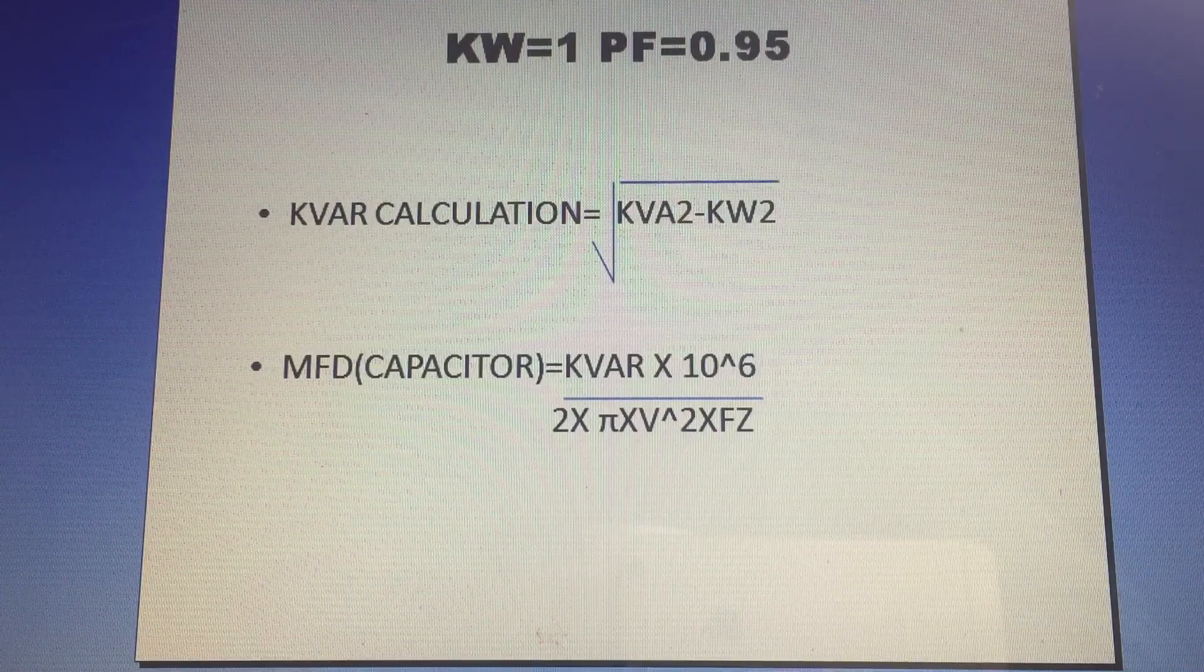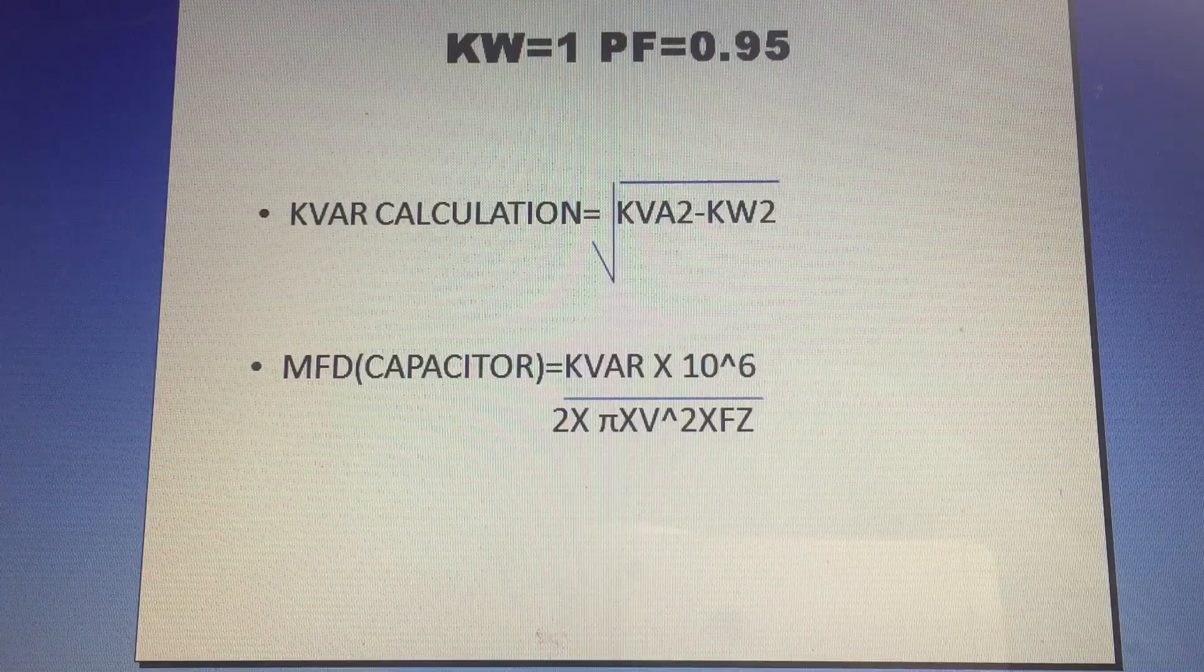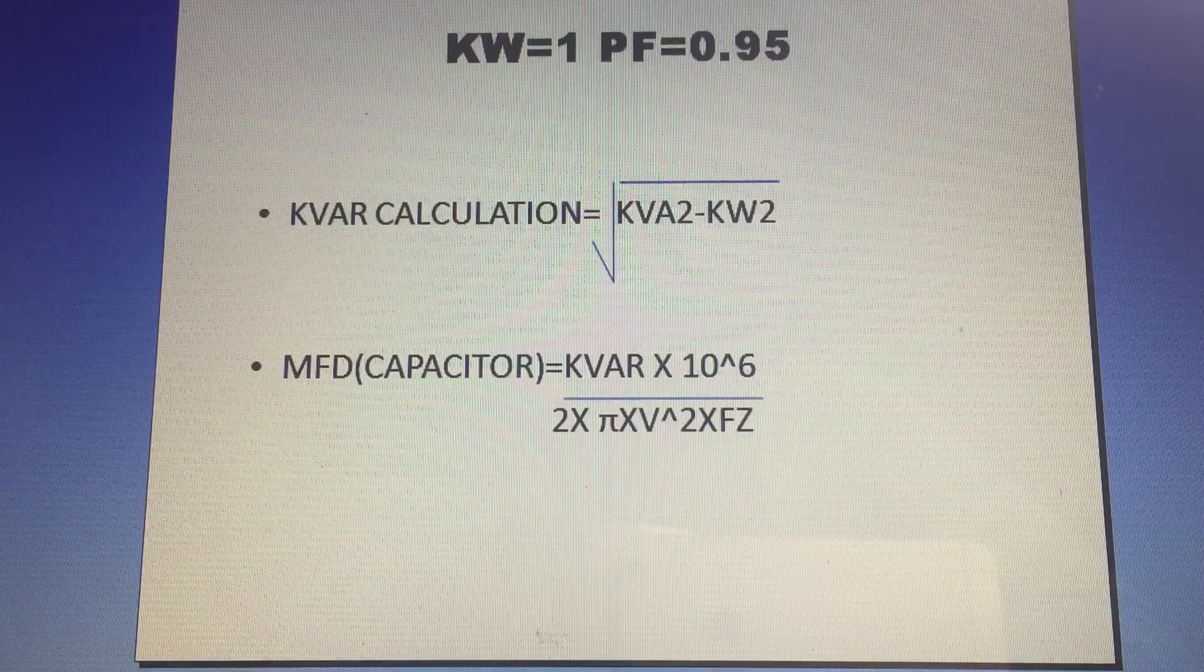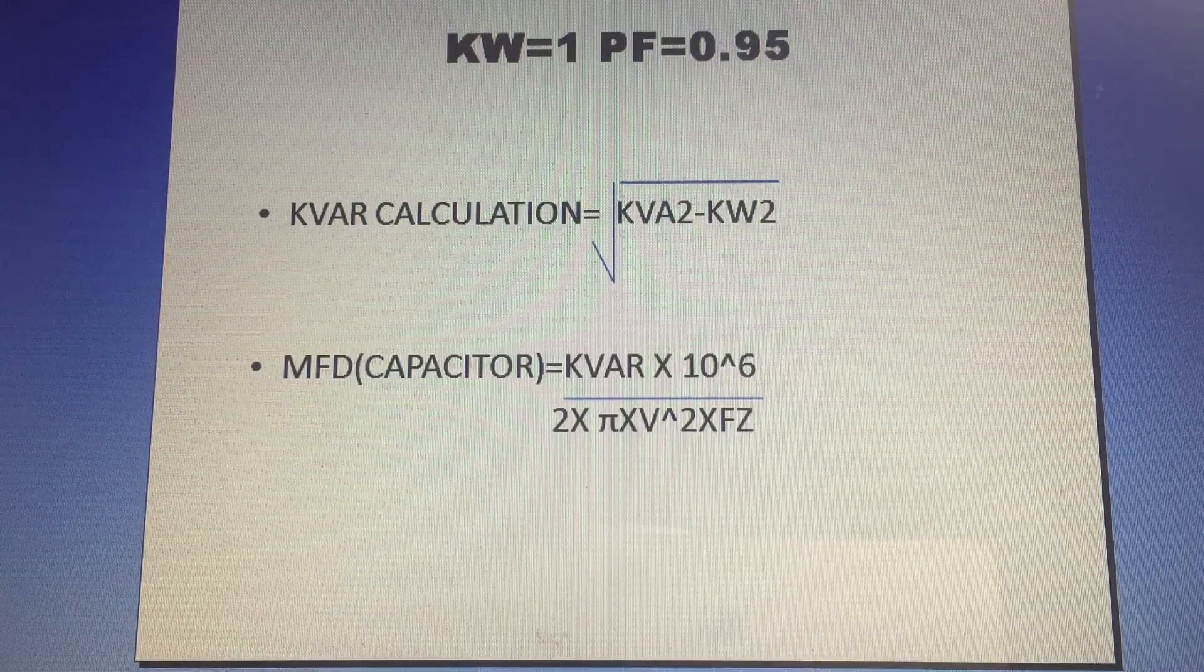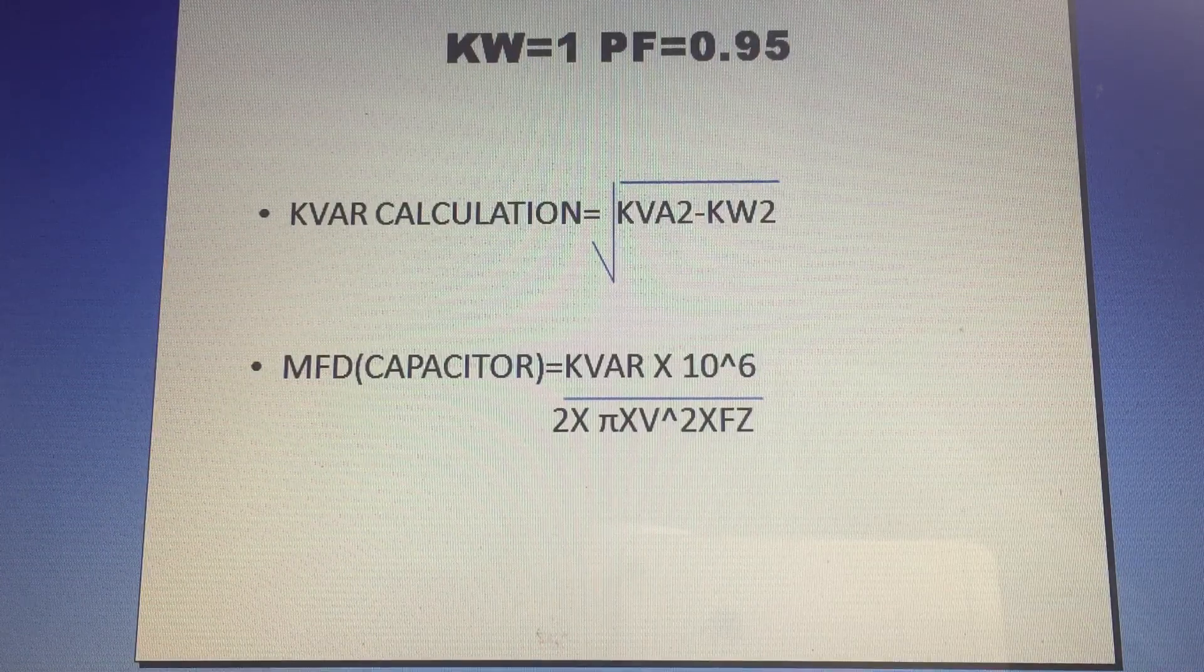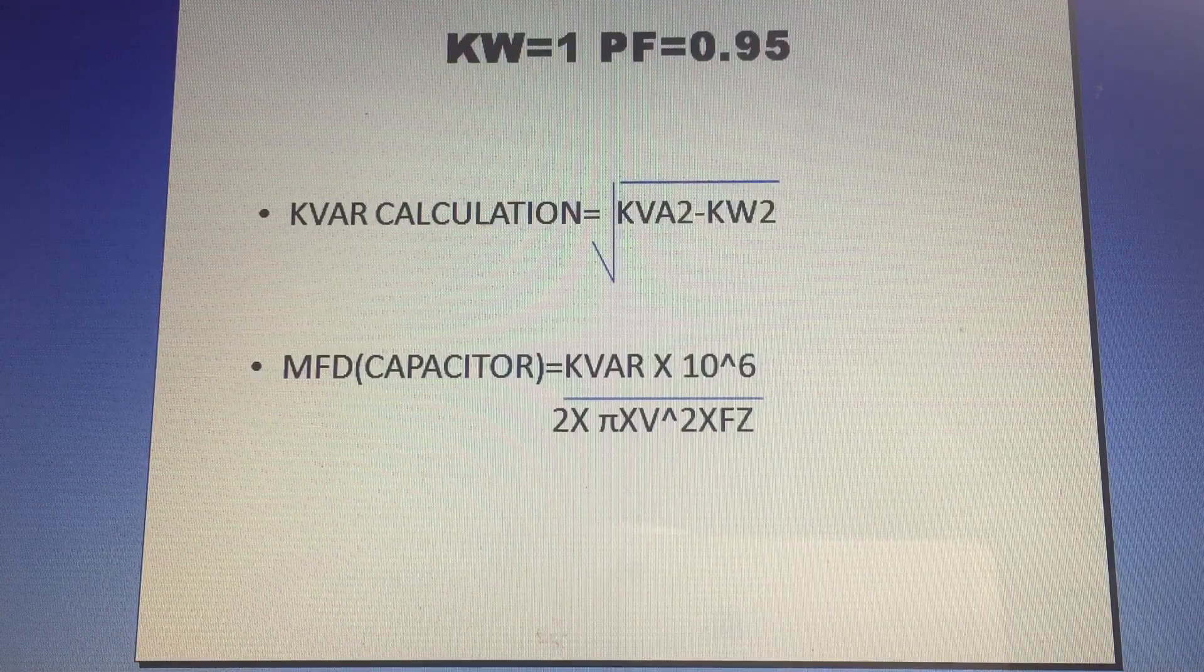If we calculate the capacitor, we need to calculate the kVAR. The kVAR calculation is kVA minus kW. For 1 kW, we calculate kW divided by 0.95 to get the kVAR value.